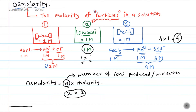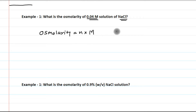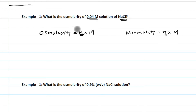Let us take one more example for osmolarity. The equation is osmolarity = n × M. Do not confuse this with normality, which has a similar equation n × M. The value of n is different: in osmolarity, n is the number of ions produced per molecule, whereas in normality, n is the number of replaceable H⁺ or OH⁻ ions. So essentially both equations are different, and osmolarity and normality are different — do not get confused between them.